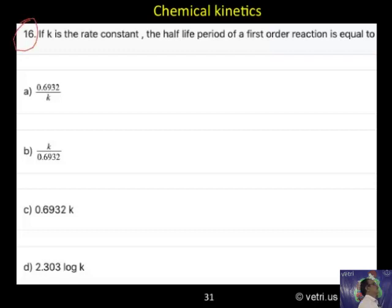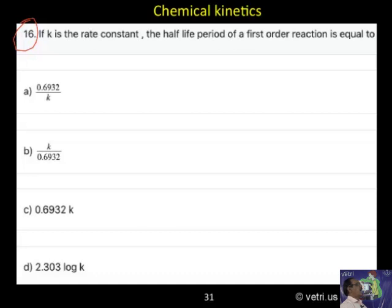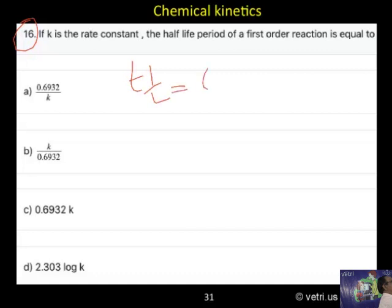Question 60. If K is the rate constant, the half-life period of the reaction, T-half, is equal to 0.693 by K.